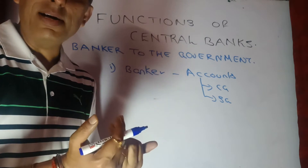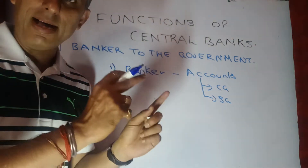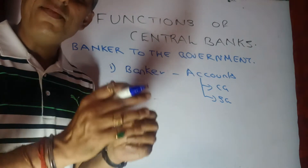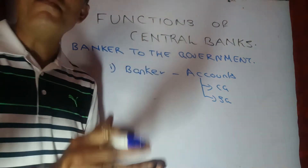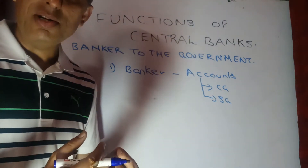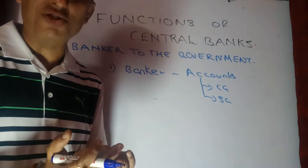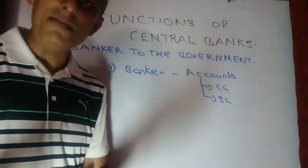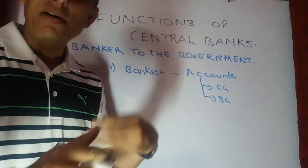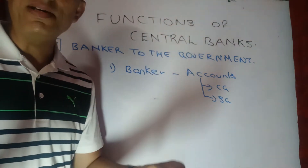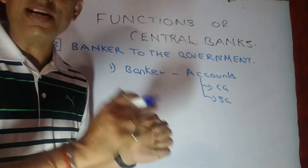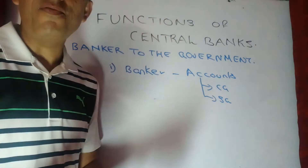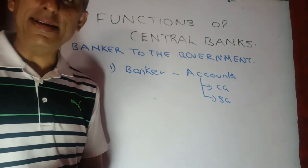Just as commercial banks like SBI maintain accounts of households and businessmen — receiving payments and making payments on their behalf based on checks drawn — similarly, on behalf of the government, RBI receives payments as well as makes payments to the concerned parties. So the first job as a banker to the government is maintaining the accounts of the government authorities.